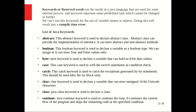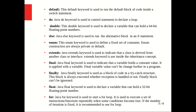The class keyword is used to declare a class. The continue keyword is used to continue the loop — it continues the flow of the program and skips the remaining code at a specified condition. Next, the default keyword is used to run the default block of code inside a switch statement.